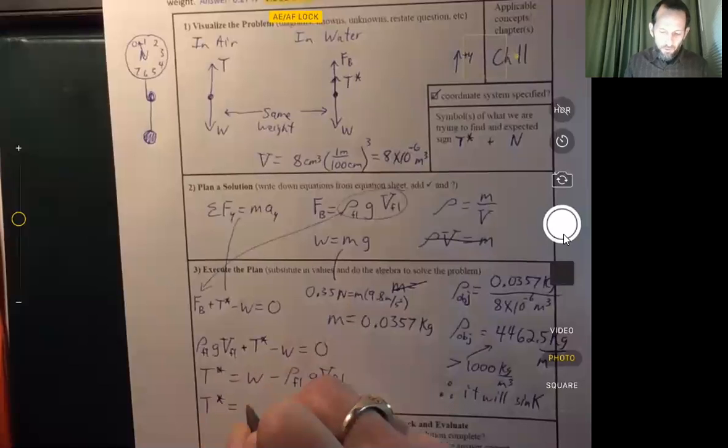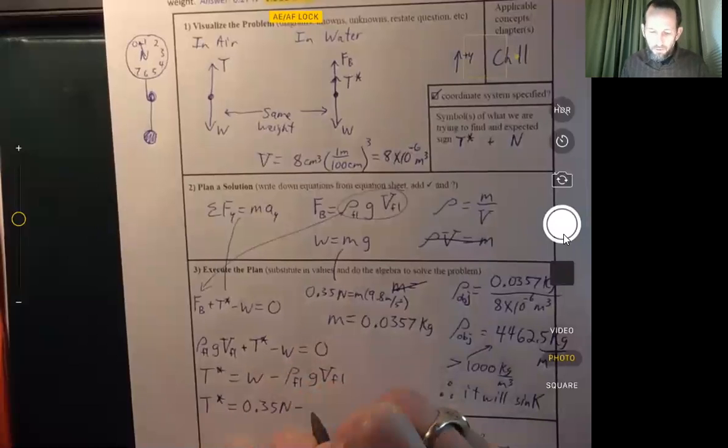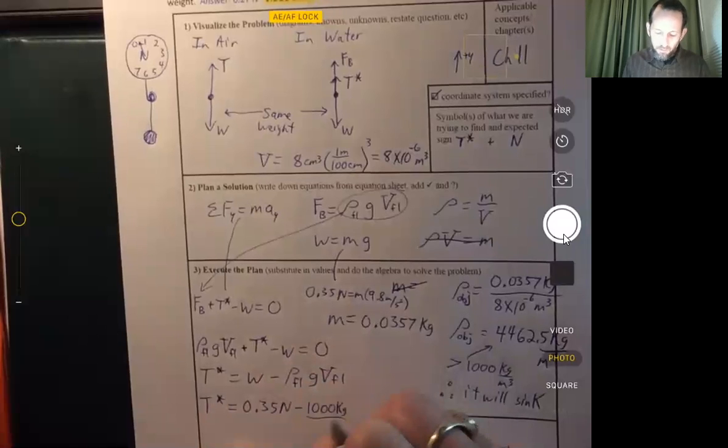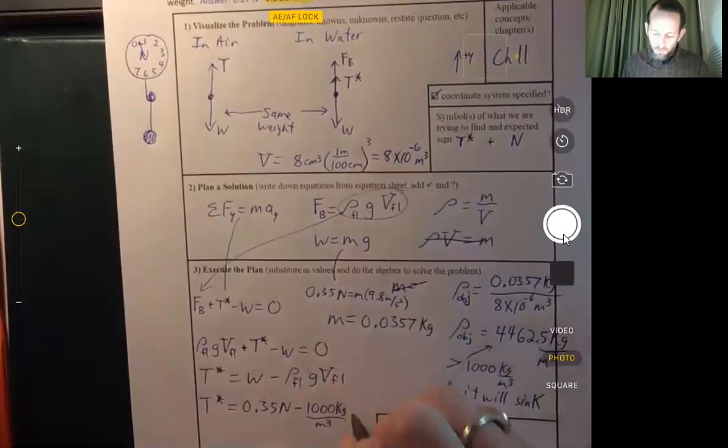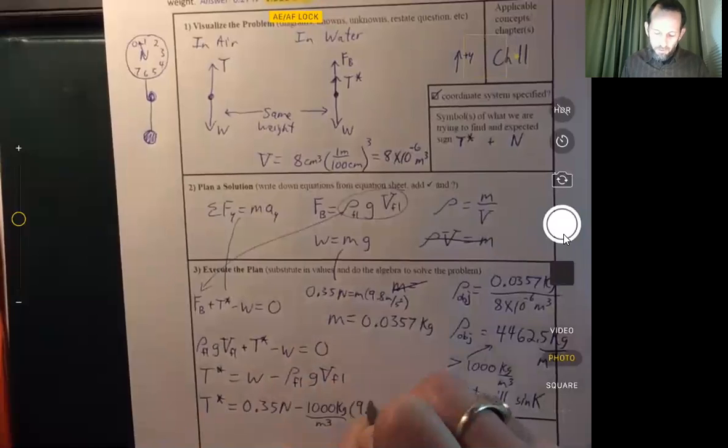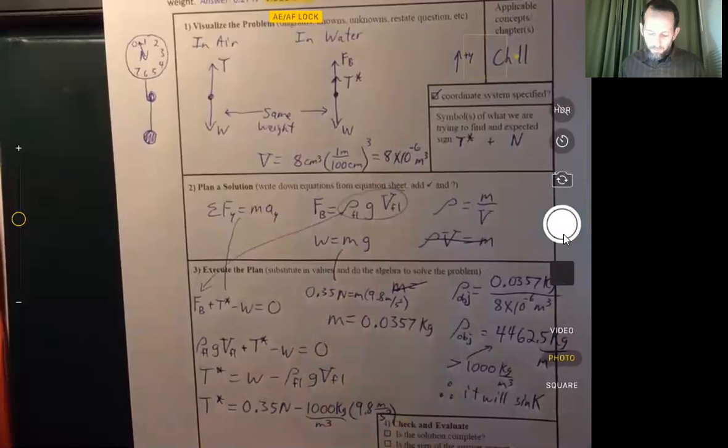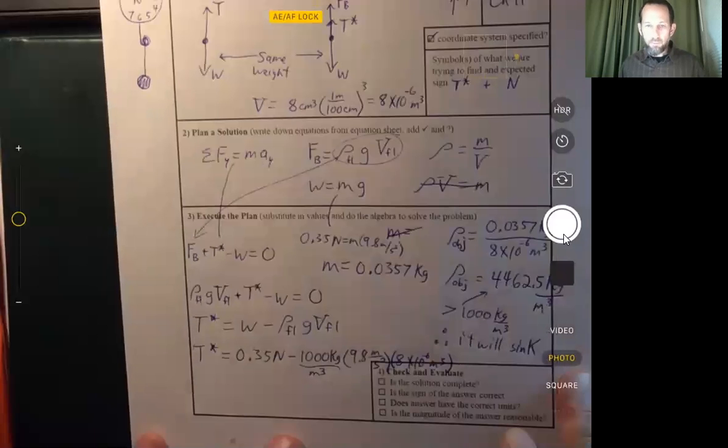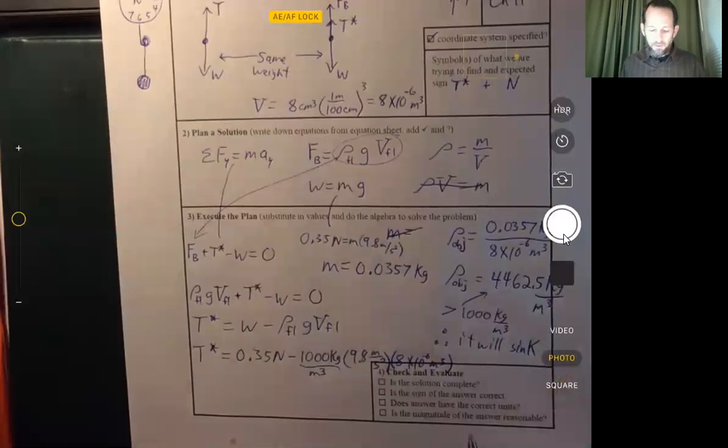And so now we can go ahead and fill this in. Density of the fluid. Let's see, it just said water. So let me assume fresh water. I'm running out of room here. Times 9.8 meters per second squared. And then times the volume, 8 times 10 to the minus sixth. That's not pretty, but you can read that.